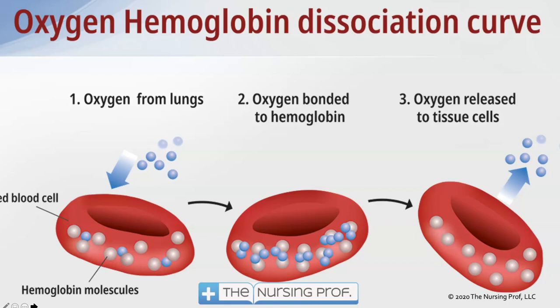You may have heard of the oxyhemoglobin dissociation curve. What happens here is that the PO2 — the oxygen dissolved in the blood — binds up to hemoglobin. In the lungs, oxygen diffuses across as PO2, enters the bloodstream as PO2, and then binds to hemoglobin and becomes our saturation. This is important because 97% of the oxygen we use at the tissue level is that which is bound to hemoglobin. There are three steps necessary to get enough oxygen to the tissue: get oxygen from the lungs to the bloodstream, bind that oxygen to hemoglobin, and then release that oxygen from hemoglobin so it can get to the tissues.